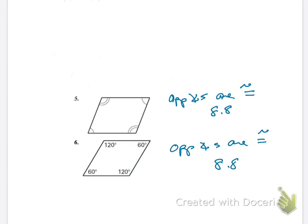And moving on to the next page, we have two more here. Number five, opposite angles are congruent, that's 8.8. And number six is the same. So that completes this homework, and that completes what we're going to need to know for our upcoming quiz.